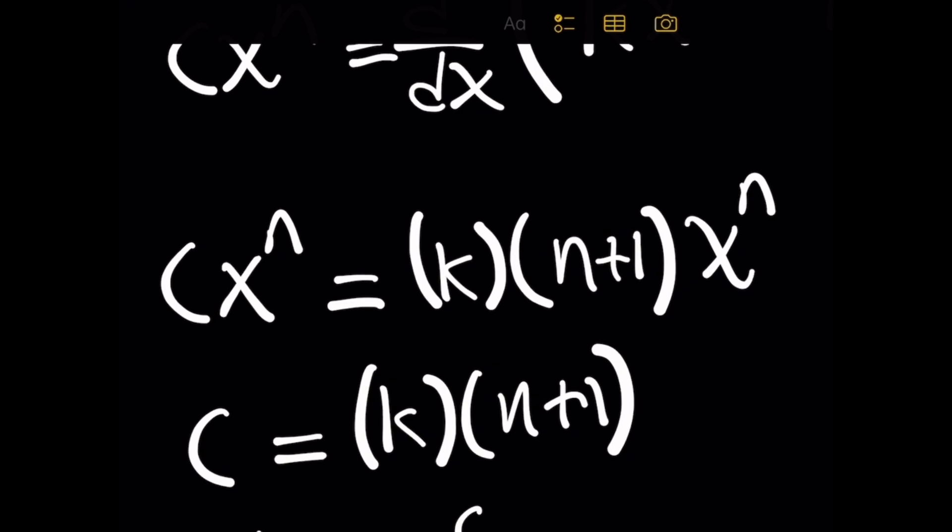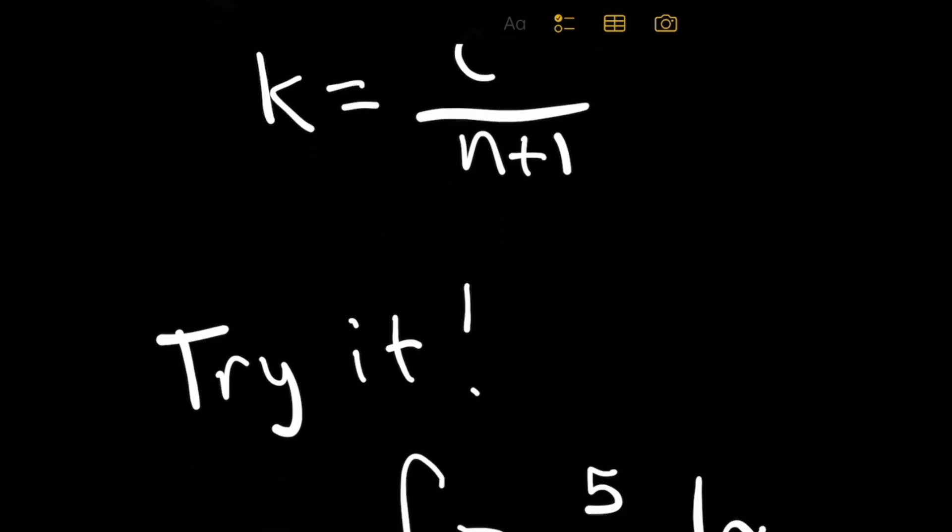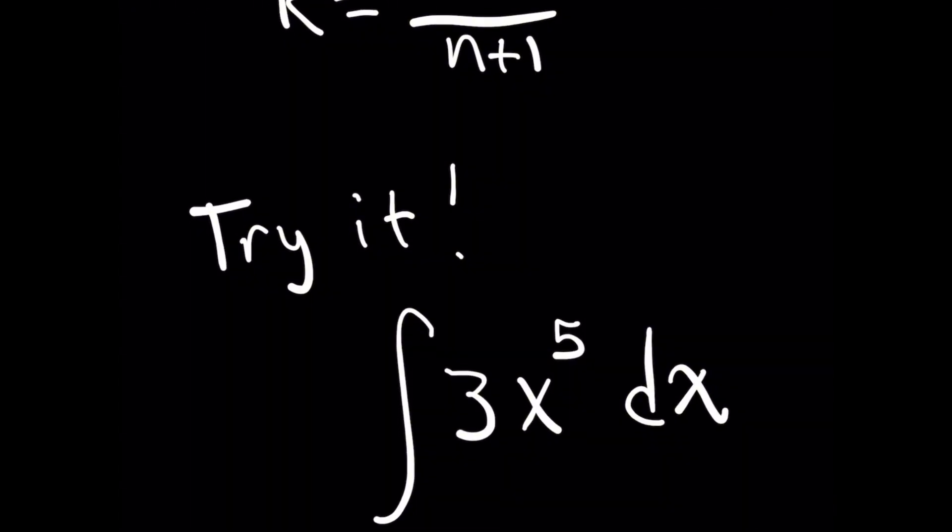So it must be the case that c equals k times n plus 1. And then when you simplify this further for k, this is what you get. So you get k equals c over n plus 1. Now for your homework, and you can leave a comment below on your answer.